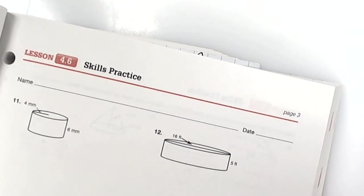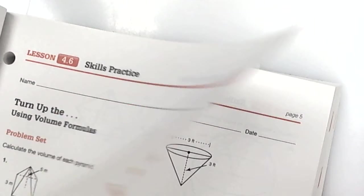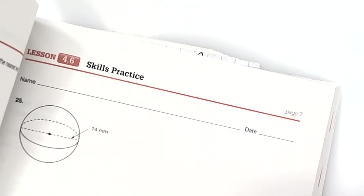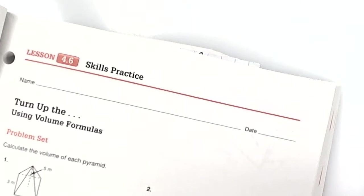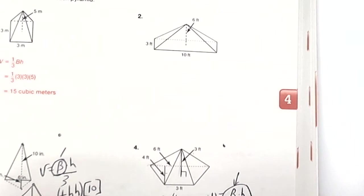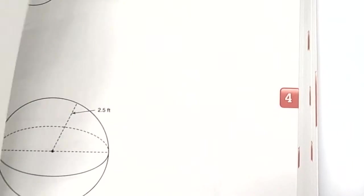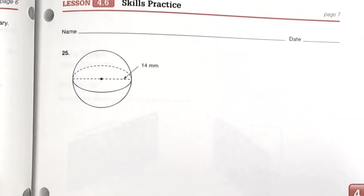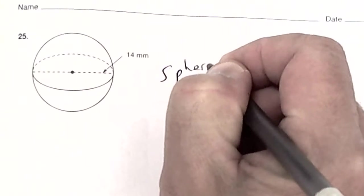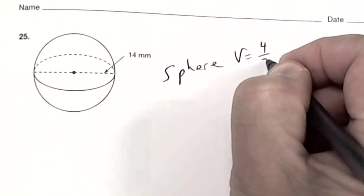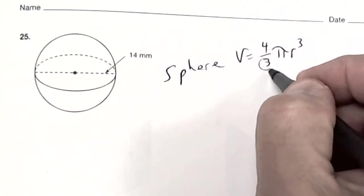We're going to do section 4.6 today — there are 25 problems. There's one shape I haven't shown you yet: a sphere. A sphere is basically a ball, like a basketball or the Earth. Write S-P-H-E-R-E. The formula for the volume of a sphere is four-thirds π r³. Remember that formula.